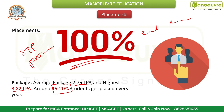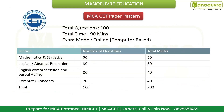Admissions are conducted through CET — you will have to crack the Maharashtra MCA CET entrance exam. The test is 90 minutes total, with 100 questions, conducted online as a computer-based test. The paper has four sections: Mathematics and Statistics, Logical and Abstract Reasoning, English Comprehension and Verbal Ability, and Computer Concepts.